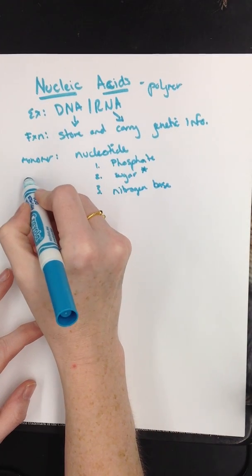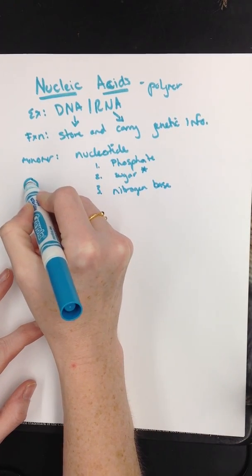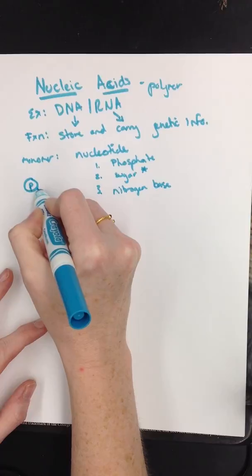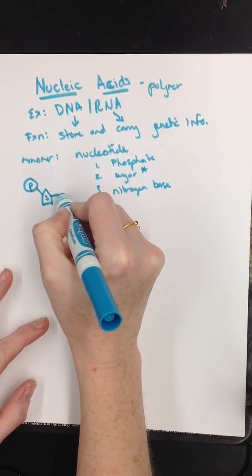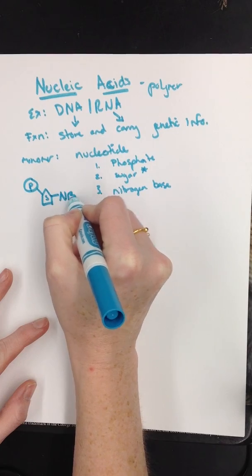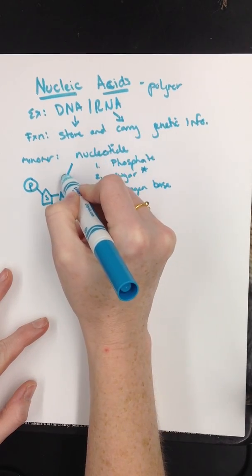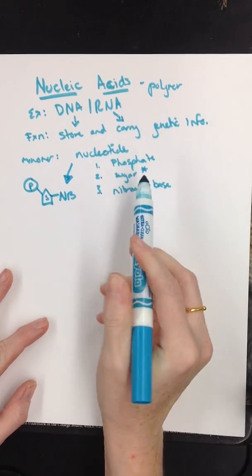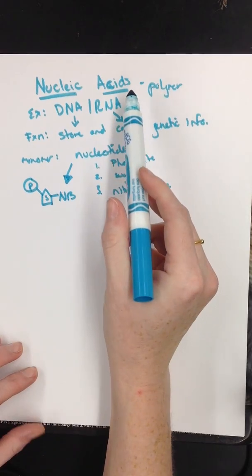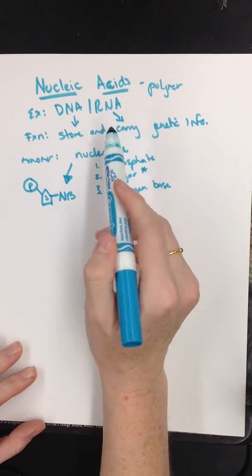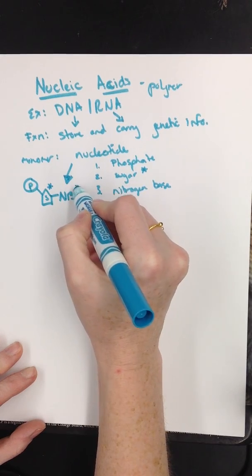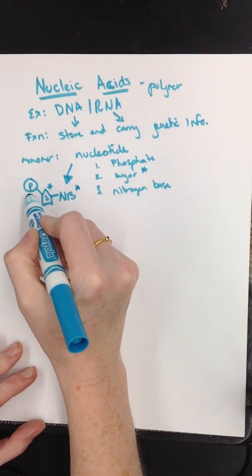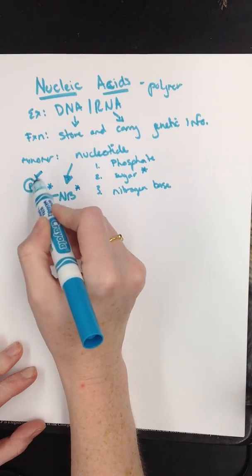So if I wanted to draw a nucleotide, here would be my phosphate, there's a P, and then that would be attached to a sugar, and then that sugar would be attached to some nitrogen base. This right here is what your basic nucleotide looks like. But whenever we go into the differences between DNA and RNA, this sugar will be different, and some of the nitrogen bases will be different.